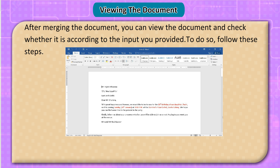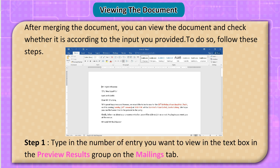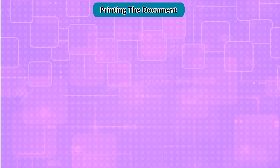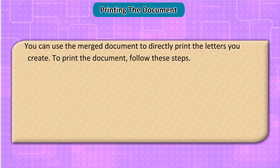Viewing the document: after merging the document, you can view it and check whether it matches the input you provided. To do so, follow these steps. Step 1: type in the number of the entry you want to view in the text box in the Preview Results group on the Mailings tab. Step 2: click the Preview Results button. The mentioned entry from the data source will be displayed.